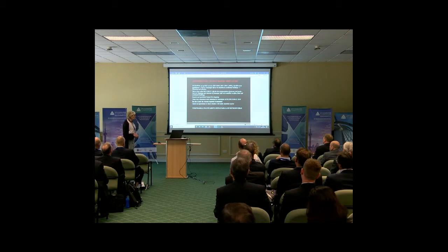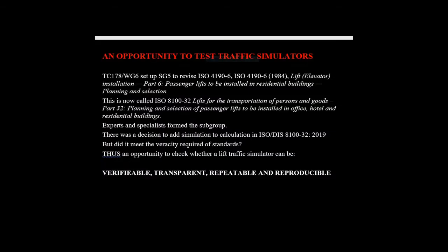It became possible to check this because a number of us in the room have been working on ISO TC178 WG6, subgroup 5, to revise the 1984 ISO standard 4190-6, which covered passenger lifts installed in residential buildings — planning and selection. You may have heard of the other 4190s, parts 1 and 2 which give dimensions, but probably not this one.